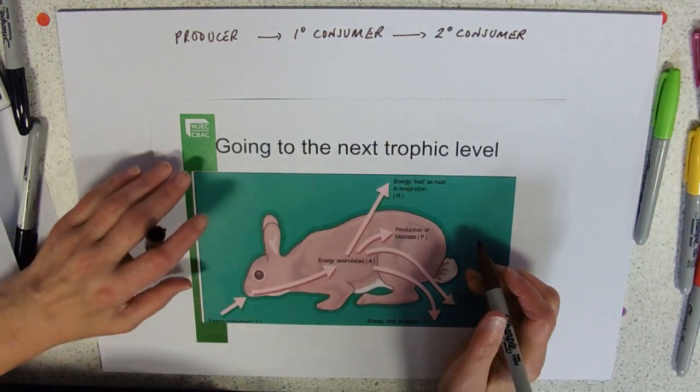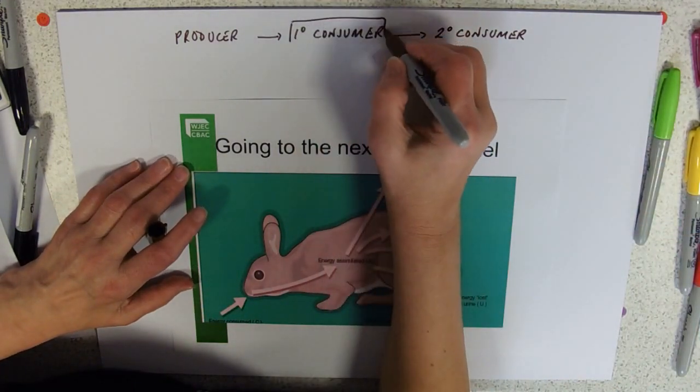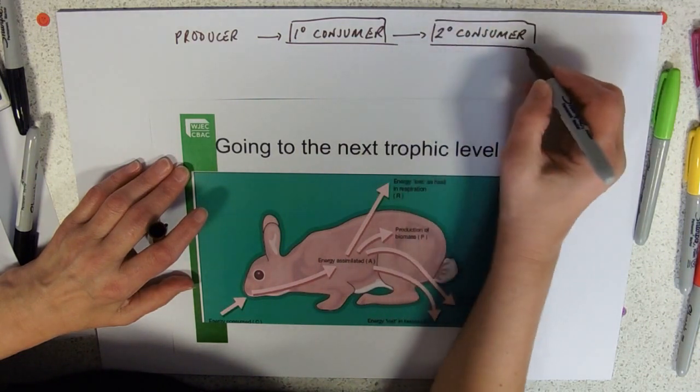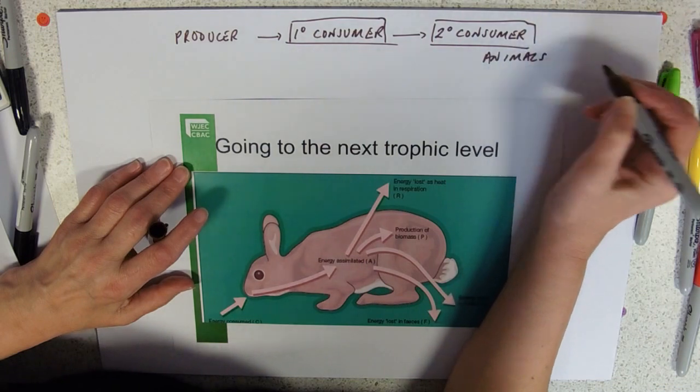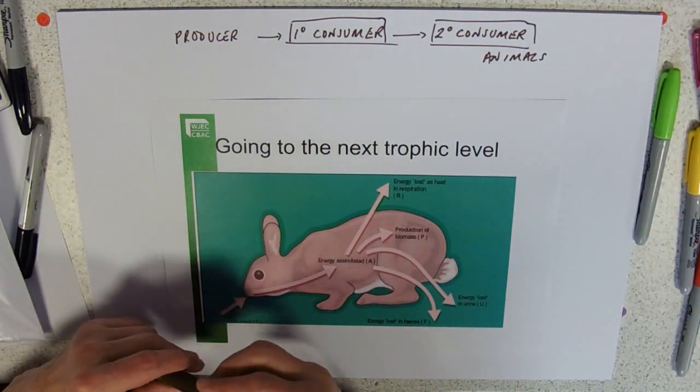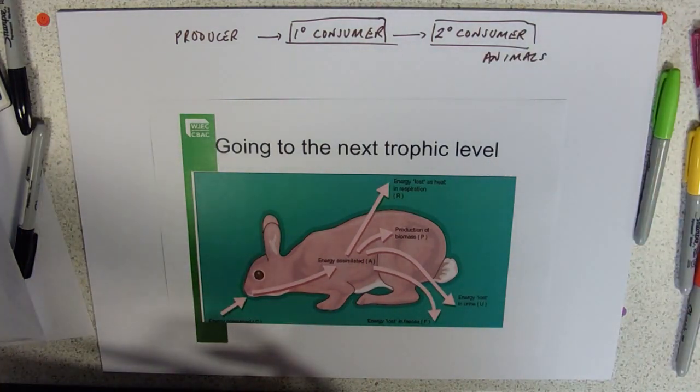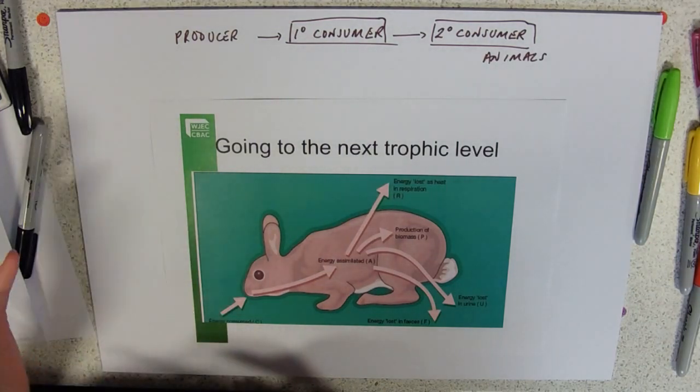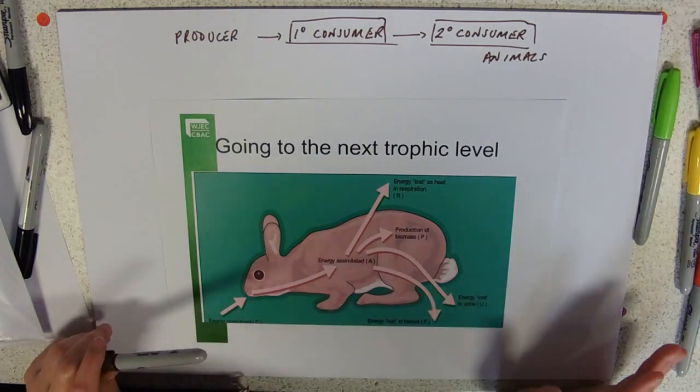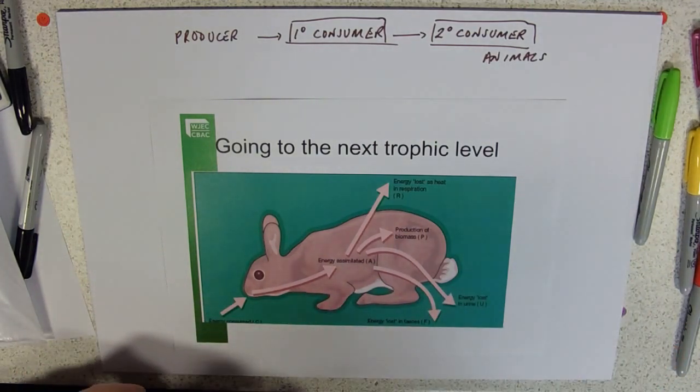The principles are the same. Here we're looking at what animals do with their food, and it doesn't matter whether you're talking about a caterpillar or a spider or an elephant. The principles are the same.